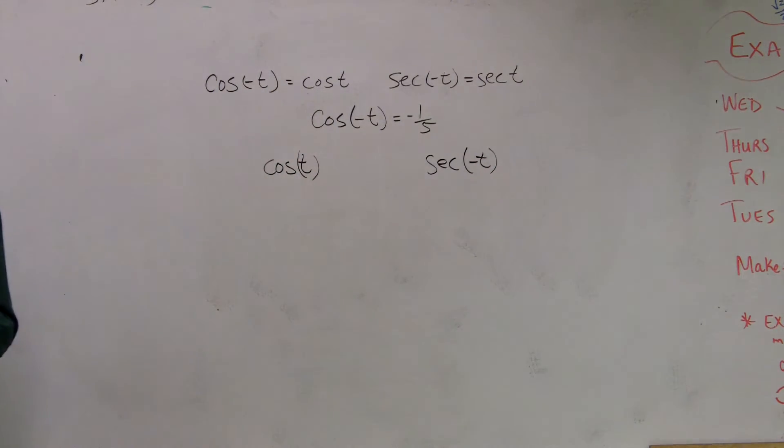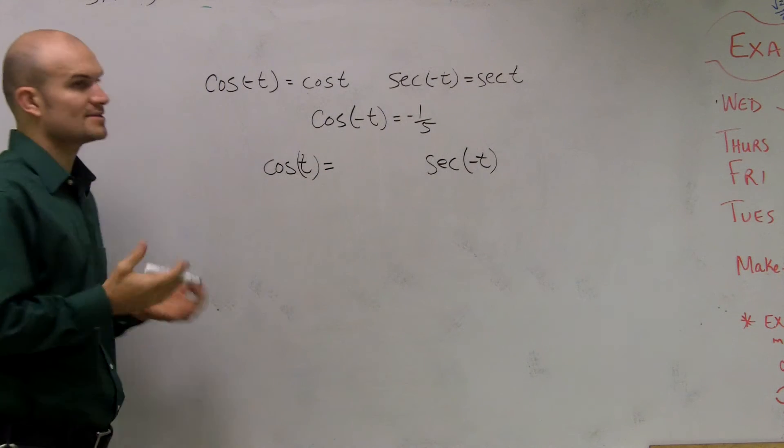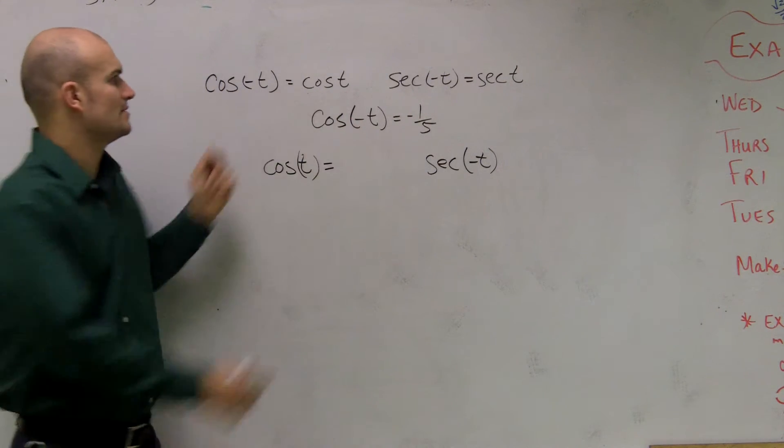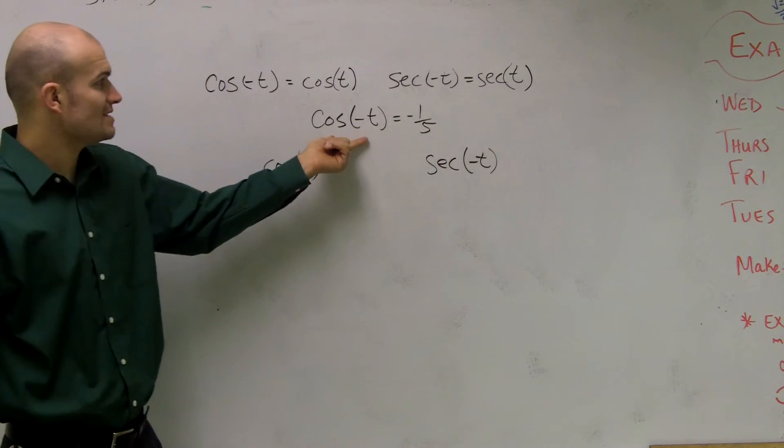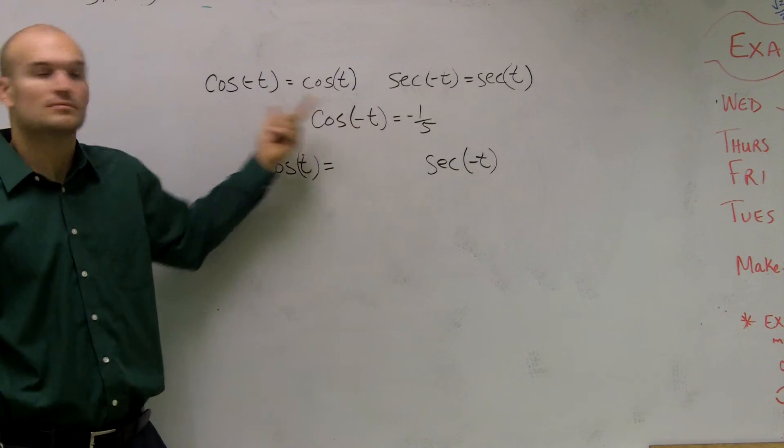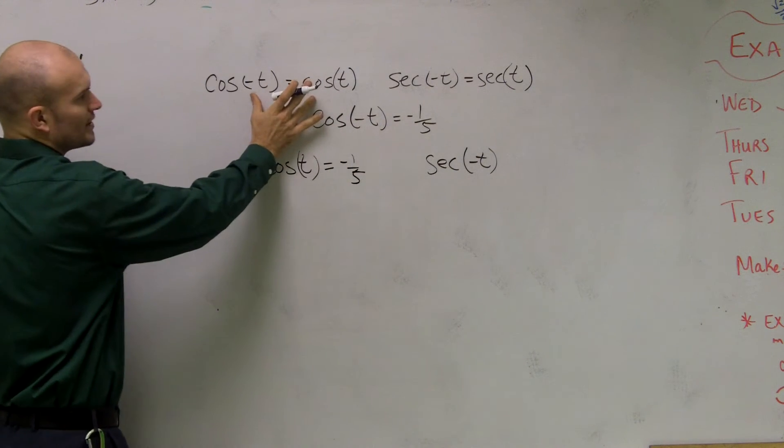Correct? Yeah, the two prompts for 39. So obviously, guys, look at it. If they say cosine of negative t is equal to cosine of t, right? So if they say cosine of negative t is equal to negative 1 fifth, what does cosine of t have to equal? Negative 1 fifth.